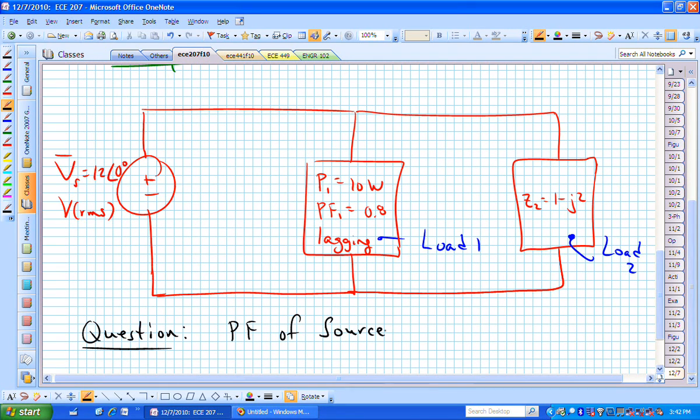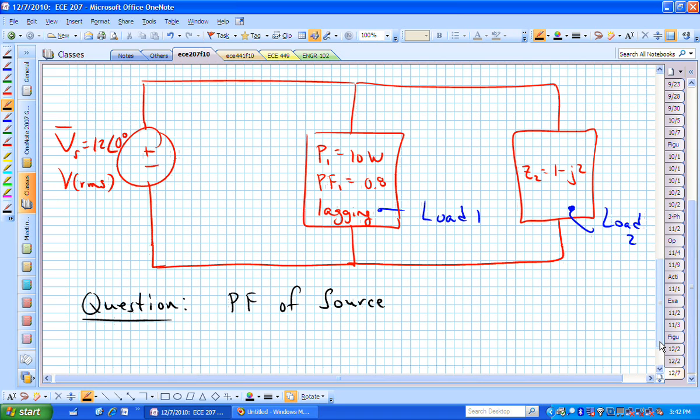Feeding or supplying those two loads is a source, voltage source V sub S, 12 at an angle of 0 degrees. That voltage is in RMS. Suppose the question for this configuration is the power factor of the source. And you have two hours this time.